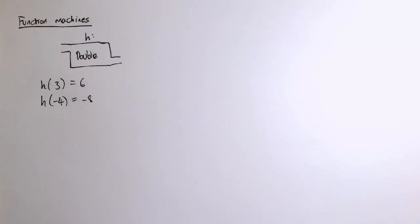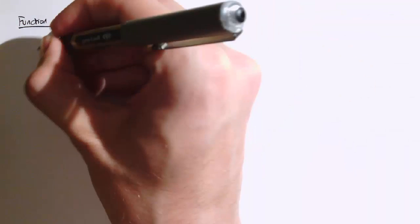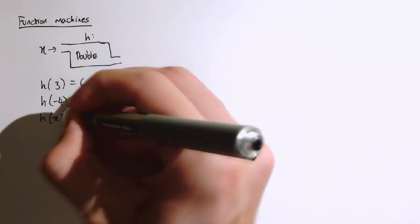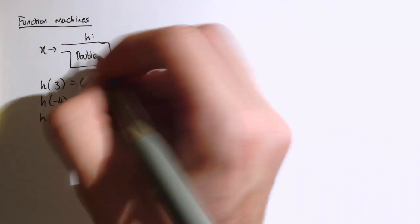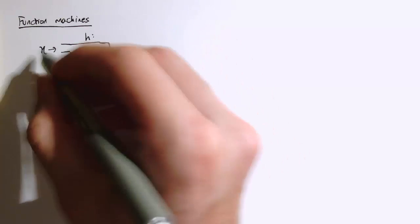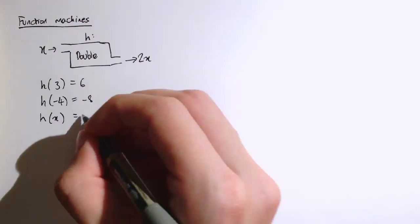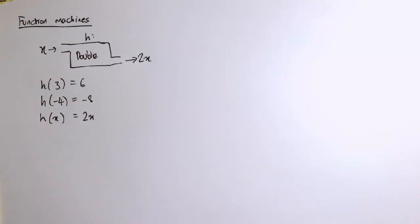And for mathematical functions it's really useful to be able to write down what a function does in general. And we think about then what happens when I just put a general value x into the machine. So what would h of x be? Well, if it's a doubling machine, if I put x in, whatever x was, what I'm going to get out is 2x. So h of x equals 2x.